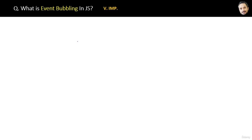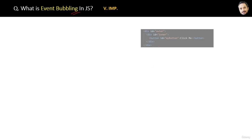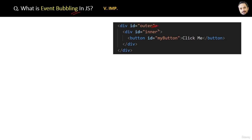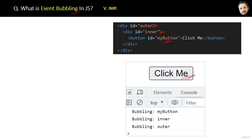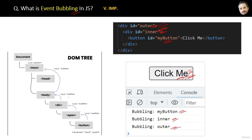What is event bubbling in JavaScript? Suppose in your HTML you have an outer div element, inside it an inner div, and inside that a button with id 'myButton' — nested elements. As per event bubbling, if we click the innermost element (the button), first the button's event will be triggered, then the inner div, then the outer div — from the bottom to the top of the DOM. That is event bubbling: the event grows upward like a bubble.